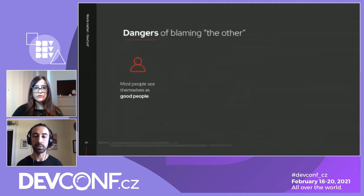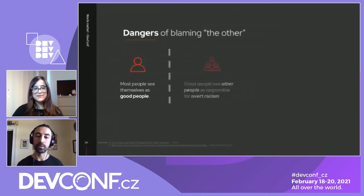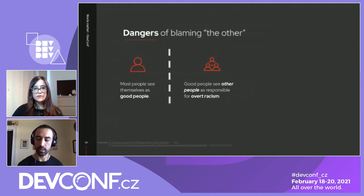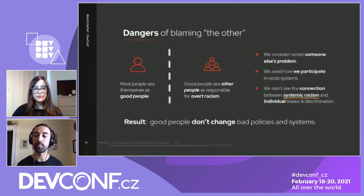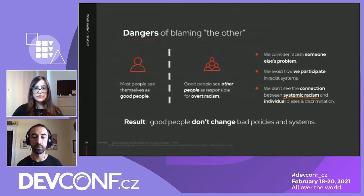Most people see themselves as good people. But if good people see others as responsible for racism — especially overt racism — we end up thinking that racism is somebody else's problem. We don't see how we actually participate in racist systems. We don't see the connection between systemic racism — racism embedded in a system — and individual biases and discrimination. The ultimate result is that good people like you and I end up not doing anything to change bad policies and systems.